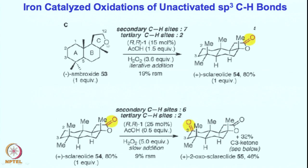Since there is an electron-activating effect at the alpha position, these positions are not easily available for reaction. In this sense, since this ring is activated by the electron-activating effect at its alpha position, this ring gets selectively activated and gives the product at that position.